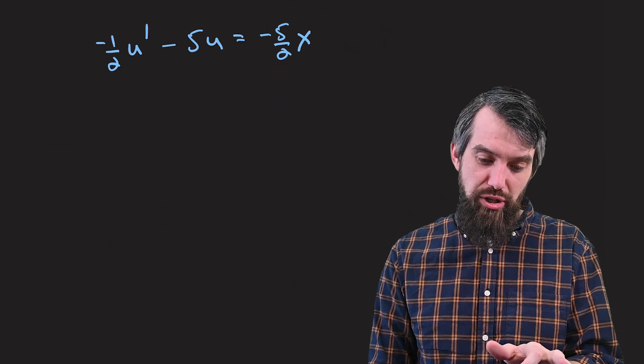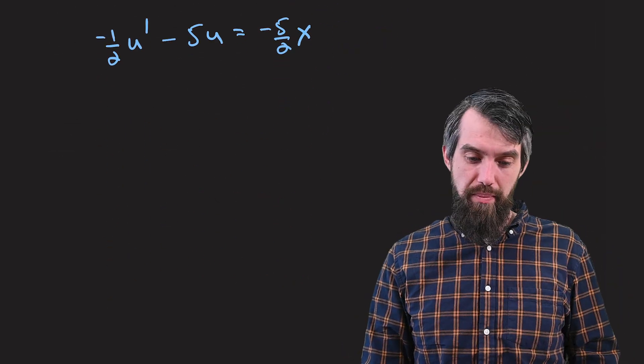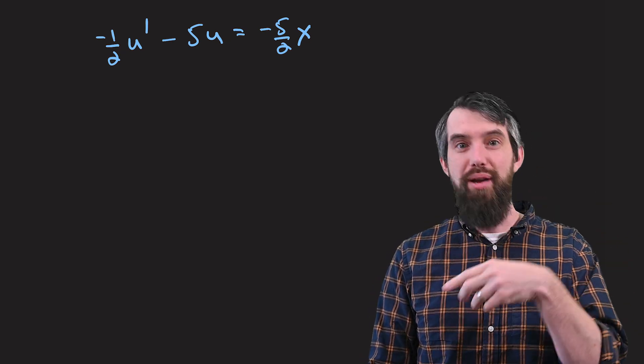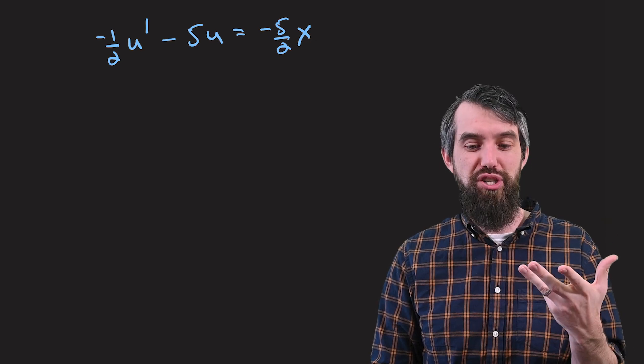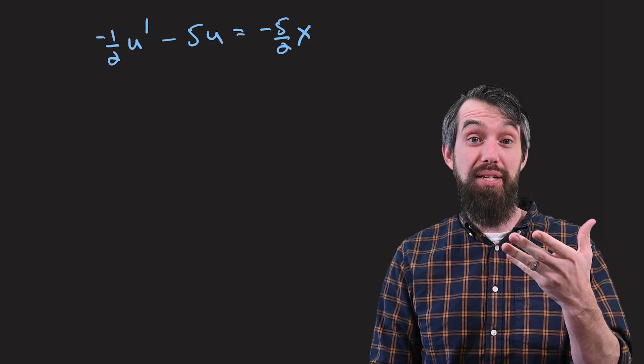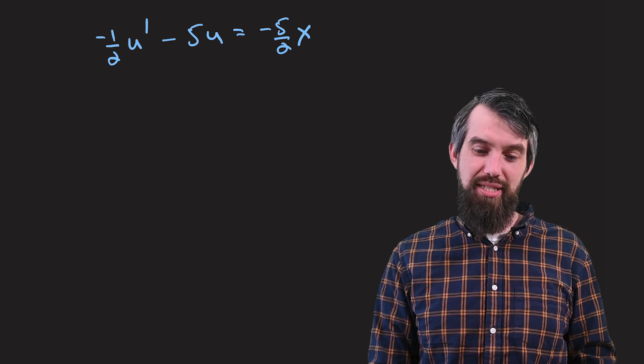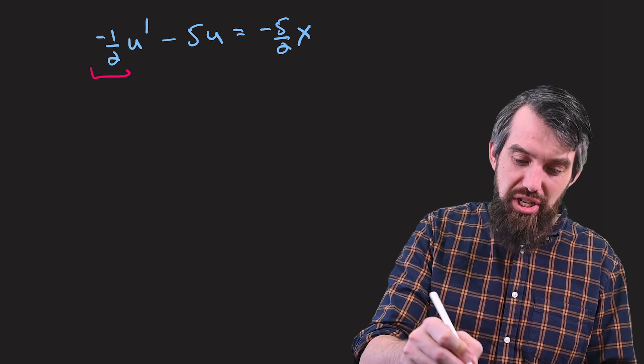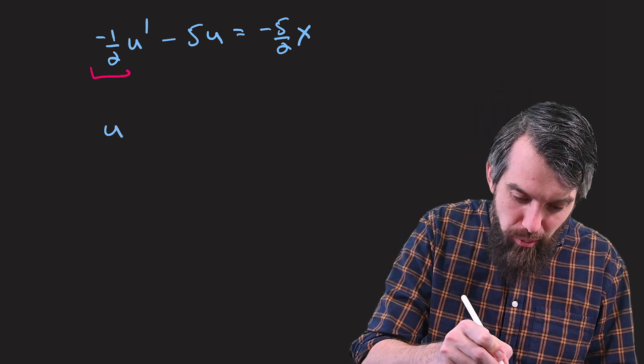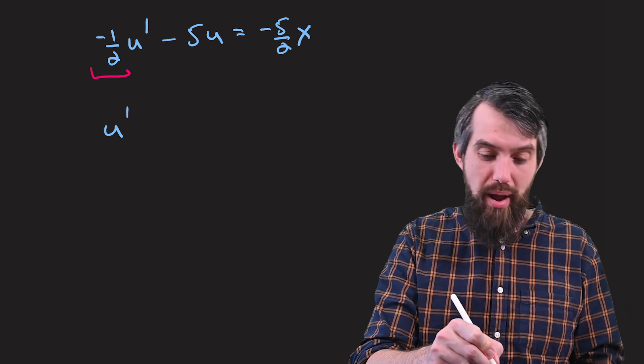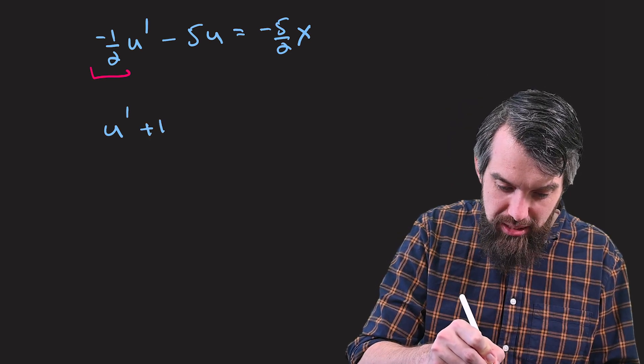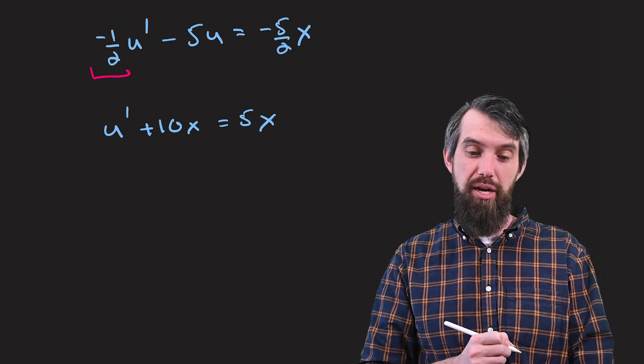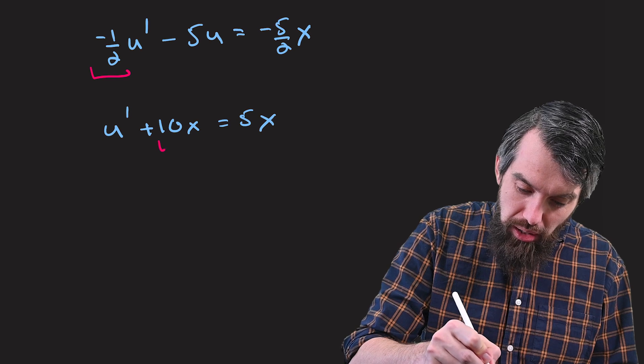So when I look at this equation, the first thing I note is it is linear. u prime with a coefficient function of minus 1 half, u with a coefficient function of minus 5, and 1 with a coefficient function of this minus 5 half times x. It's not actually yet in standard form. So that's a little trick. We've got this minus 1 half here. So if I want to convert it to standard form, which just has a u prime out the front, then I'm going to multiply everything by minus 2. So that's going to give me plus 10u, and then that's going to be equal to 5 times x. That makes it a bit cleaner.